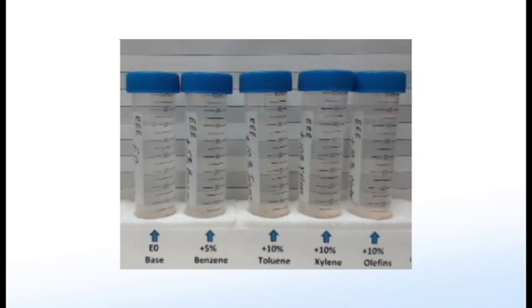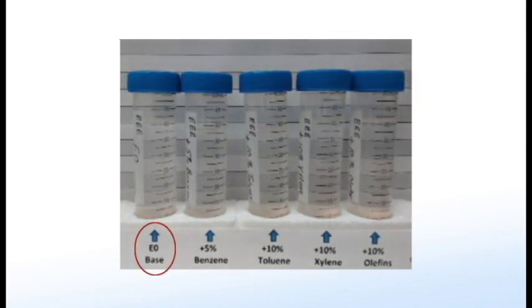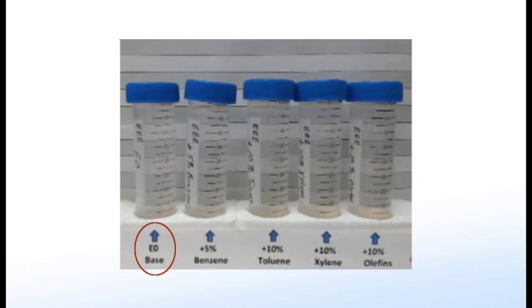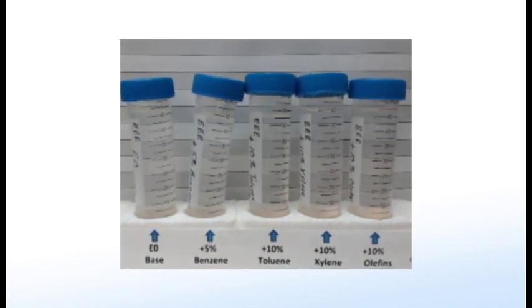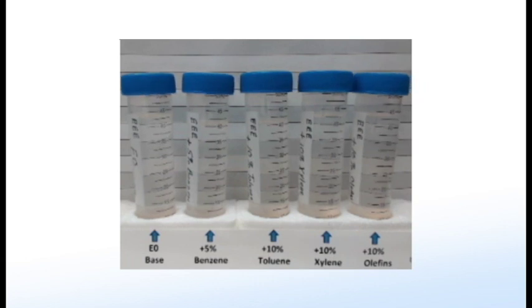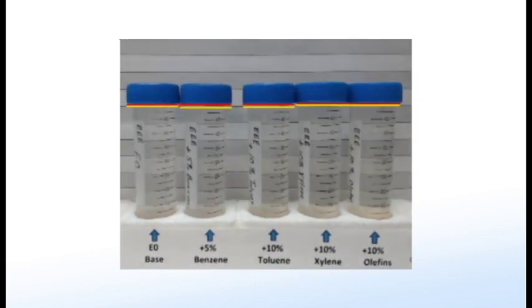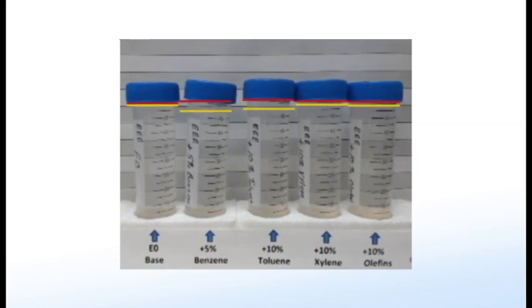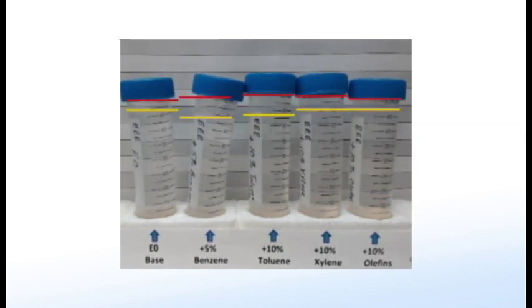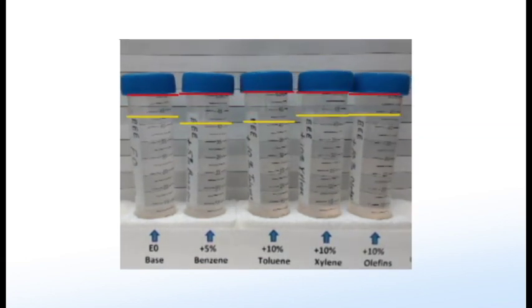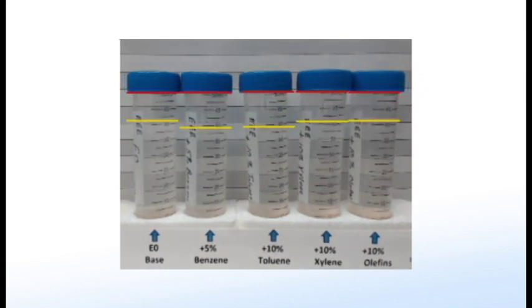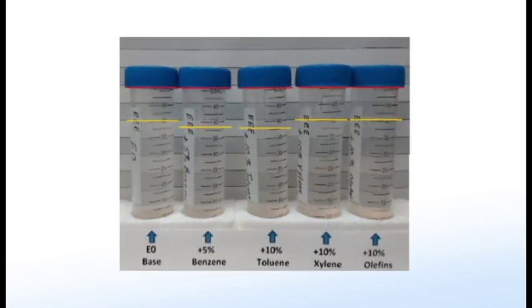This seven-day time-lapse shows base fuel that the Environmental Protection Agency or EPA uses for vehicle emission certification requirements with various benzene components. This fuel is commonly called indolene. Note that ethanol is not present in any of these samples. As you can see, these bottles swell and distort, allowing fuel to leak directly through their plastic walls.